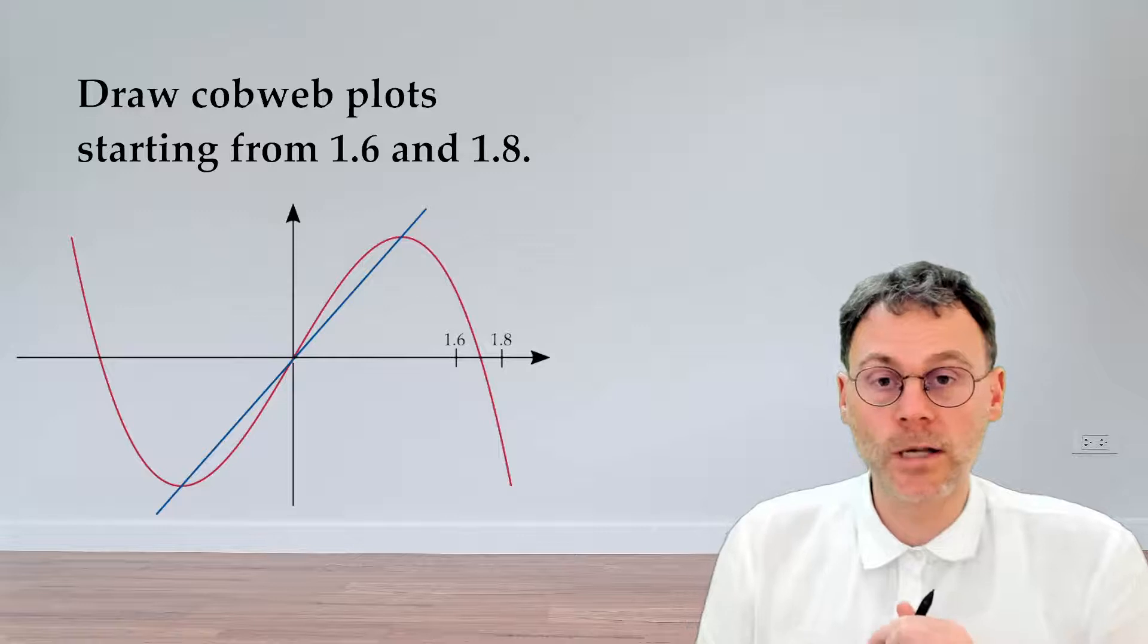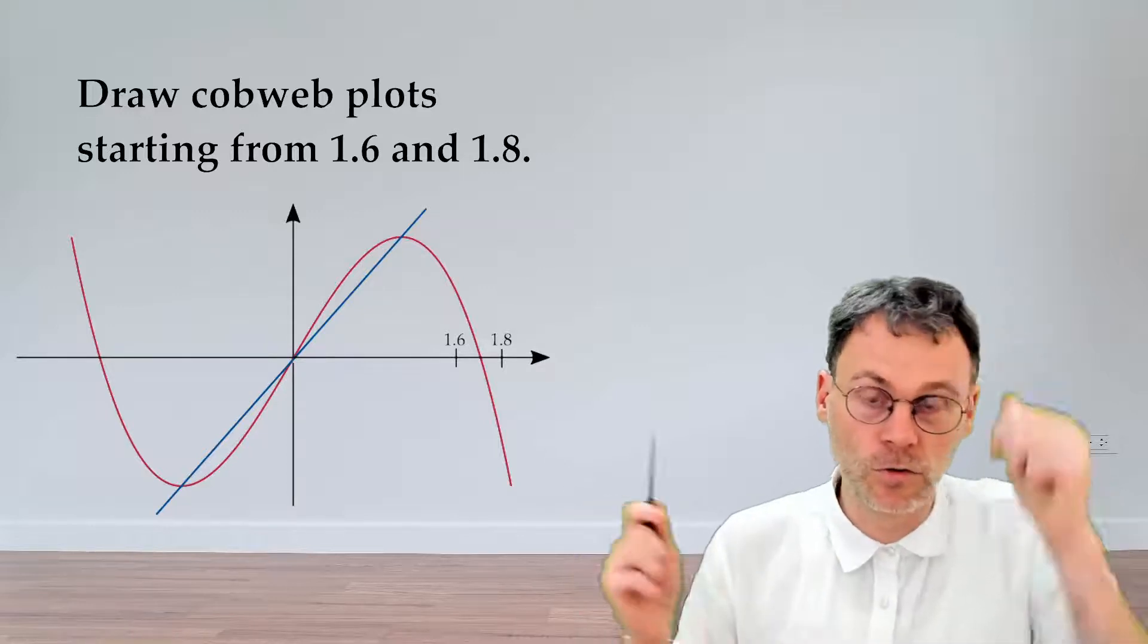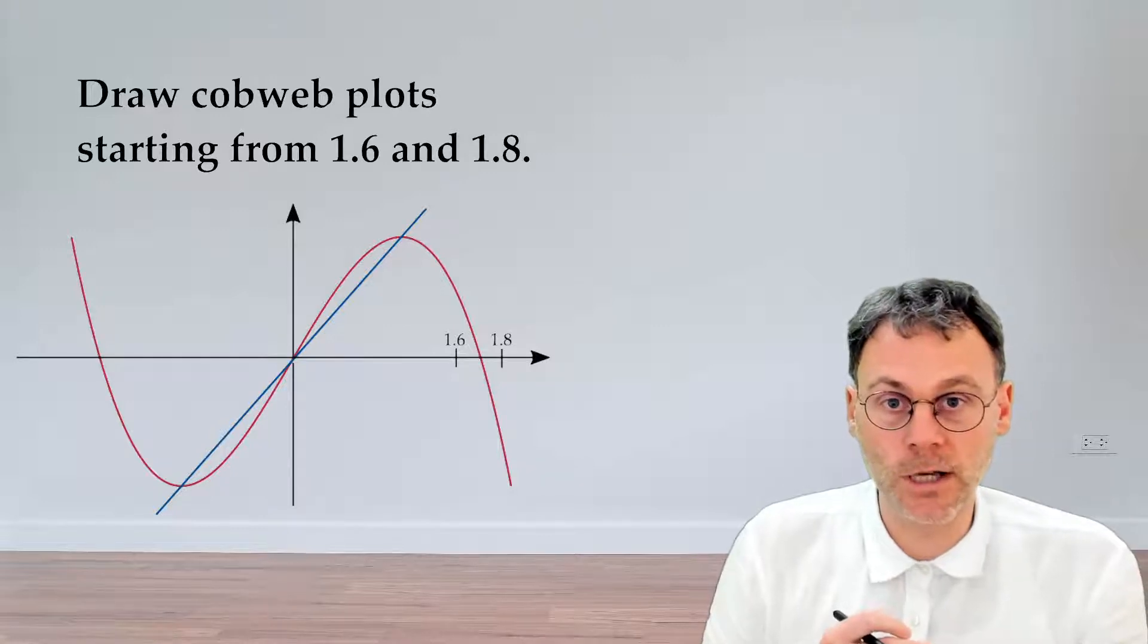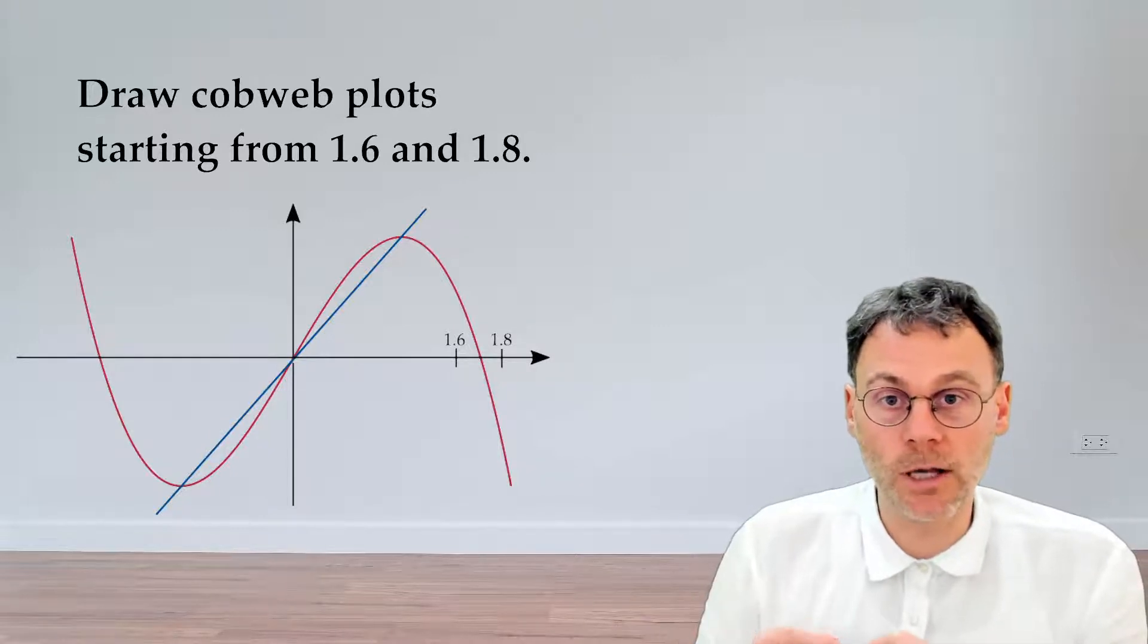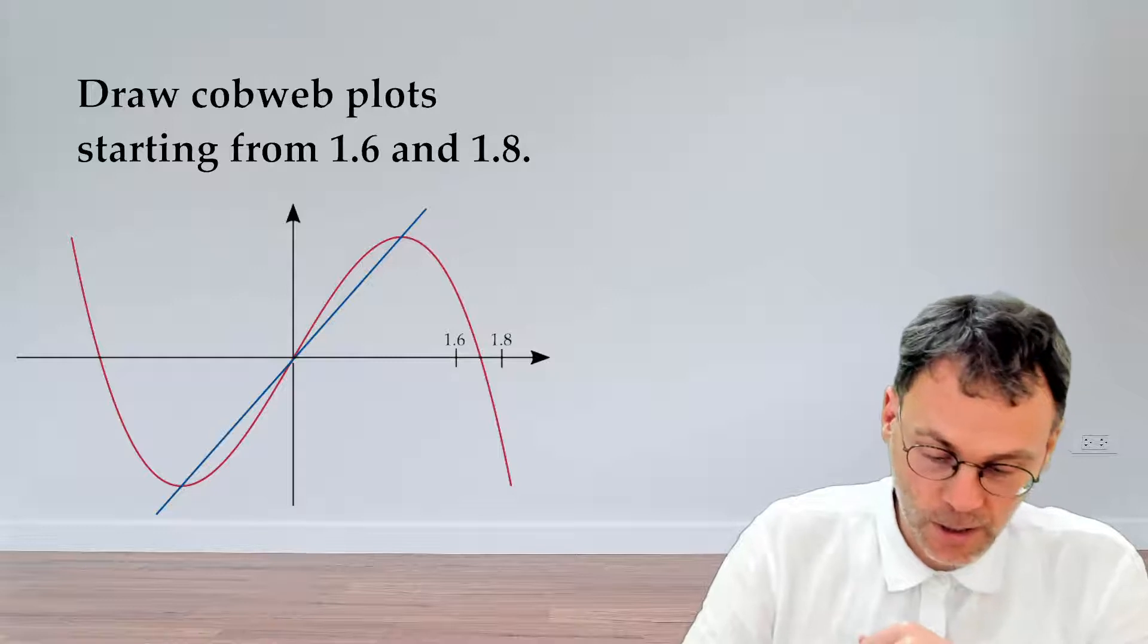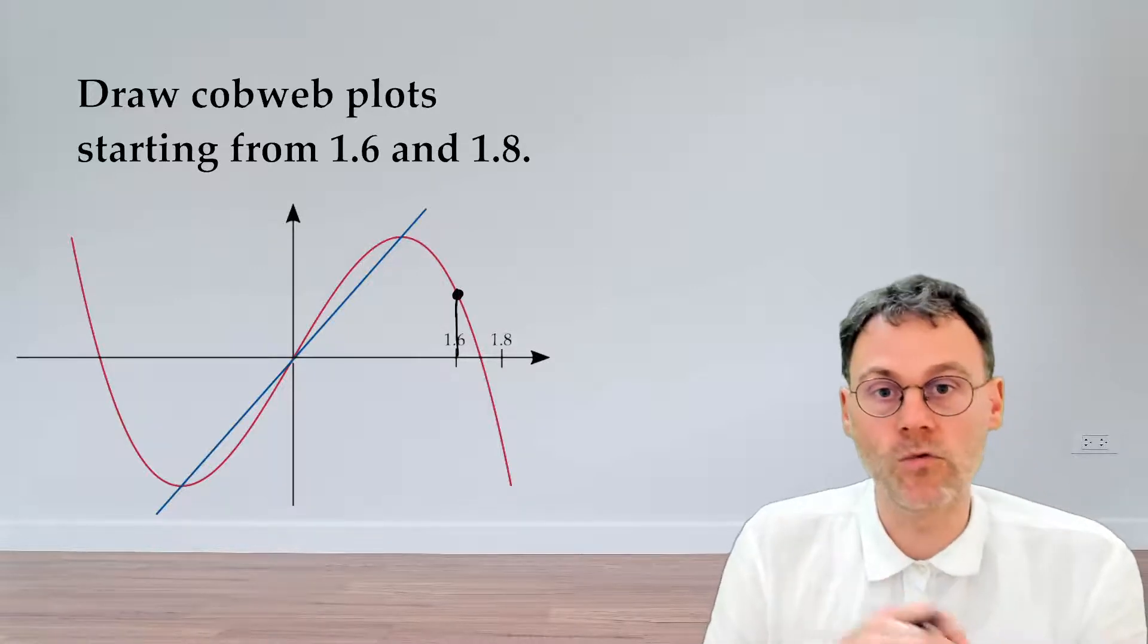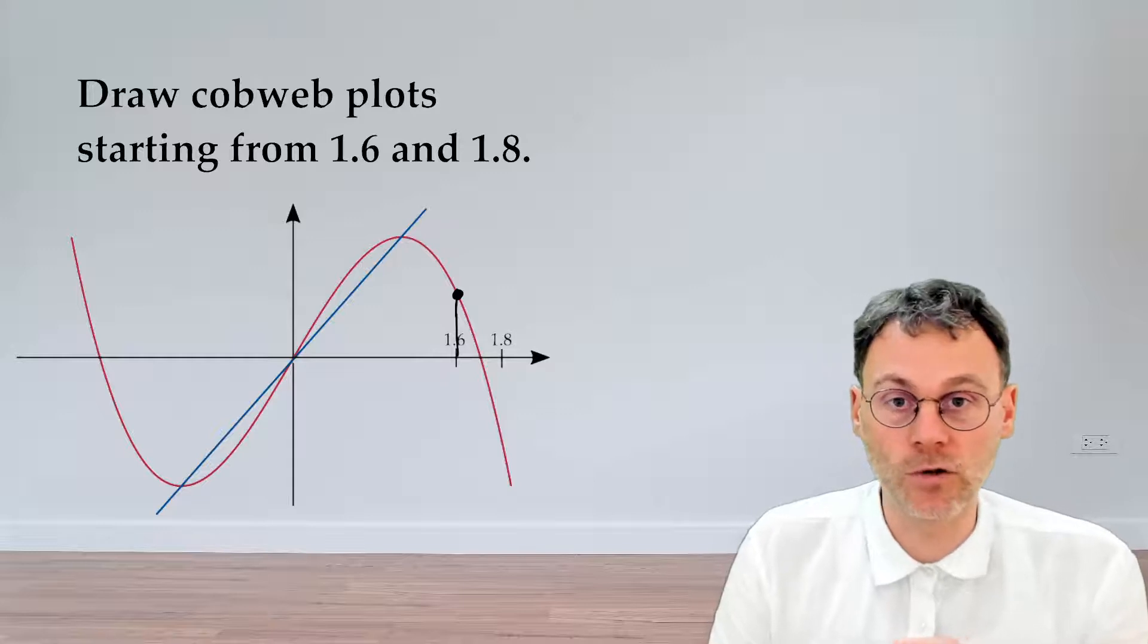Drawing these plots is always fun, but we need to be careful to draw them in the right order. If we start by looking at the orbit of 1.6, the first thing we need to calculate is f of 1.6. We start from 1.6 and go up until we reach the graph corresponding to f of x.